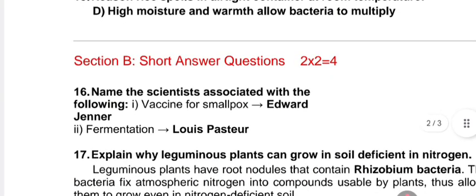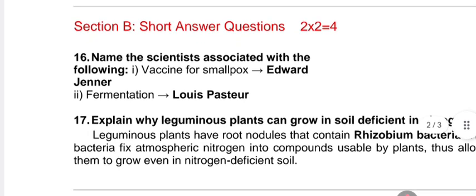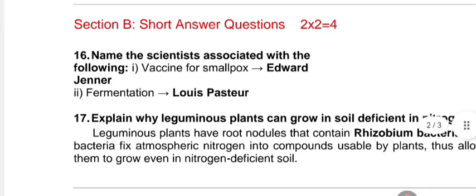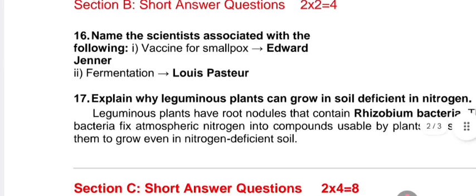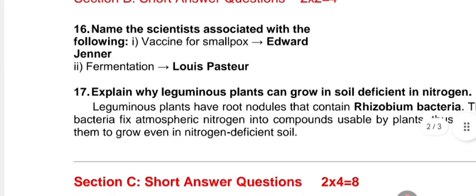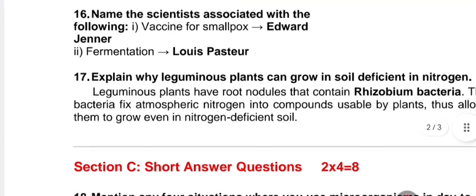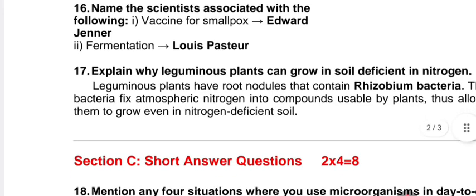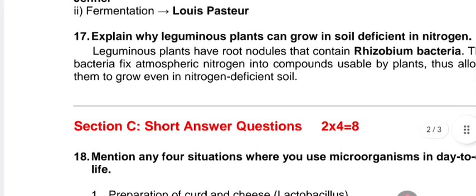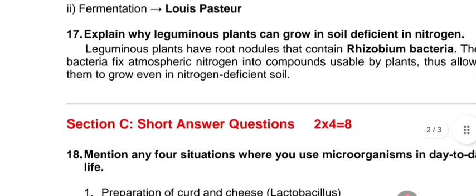Section B contains two questions of two marks each — questions 16 and 17. Question 16: name the scientists associated with the following — vaccine for smallpox: Edward Jenner; fermentation: Louis Pasteur.